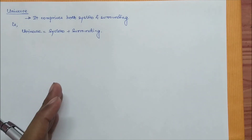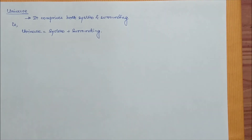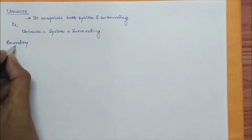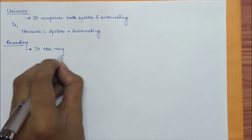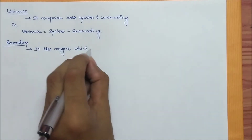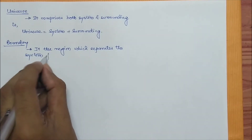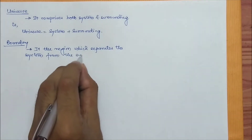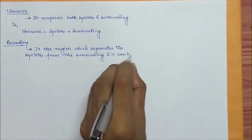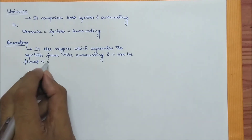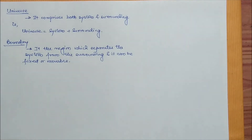Now as we have defined both system and surrounding, you will ask how we separate the system from the surrounding. There is one more term known as boundary. The boundary is the region which separates the system from the surrounding, and it can be fixed or movable. How it is fixed or movable, I will discuss in my further videos.